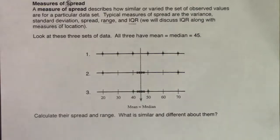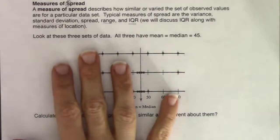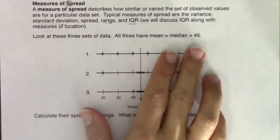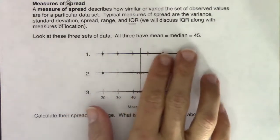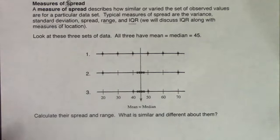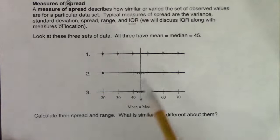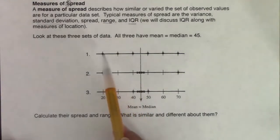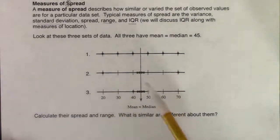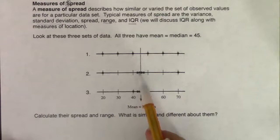Let's take a look at some data sets — just very general data, no context. Look at these three sets of data. All three have the same mean and median: the mean is 45 and the median is 45. They're perfectly symmetric. Things are symmetric when the mean and median are the same. In data set one, I've got data values of 20, 30, 40, 50, 60, 70.